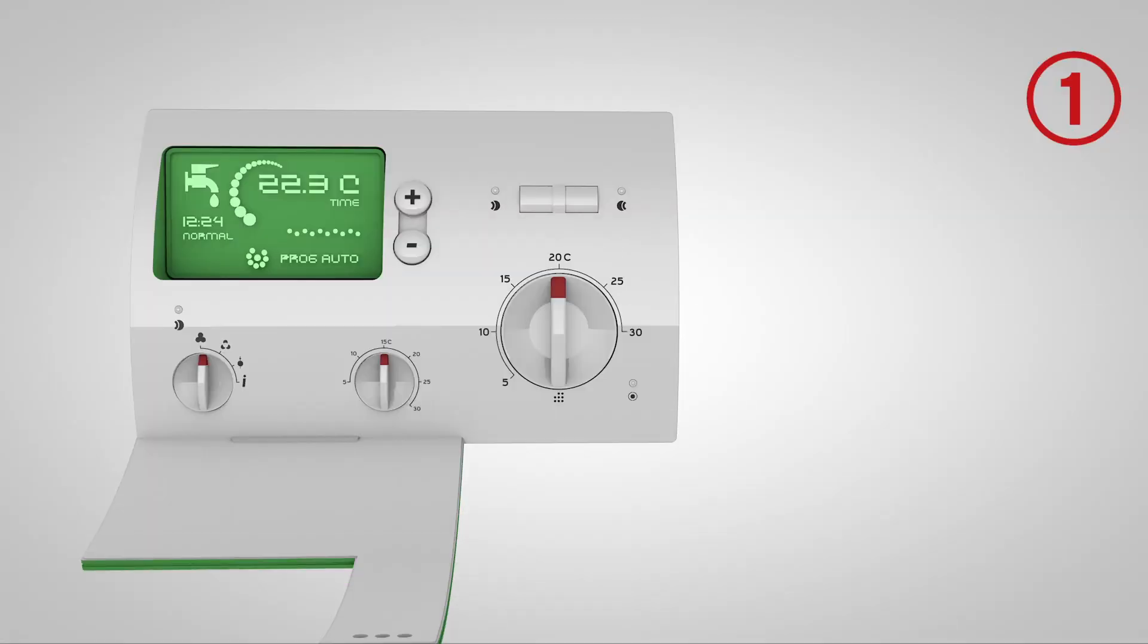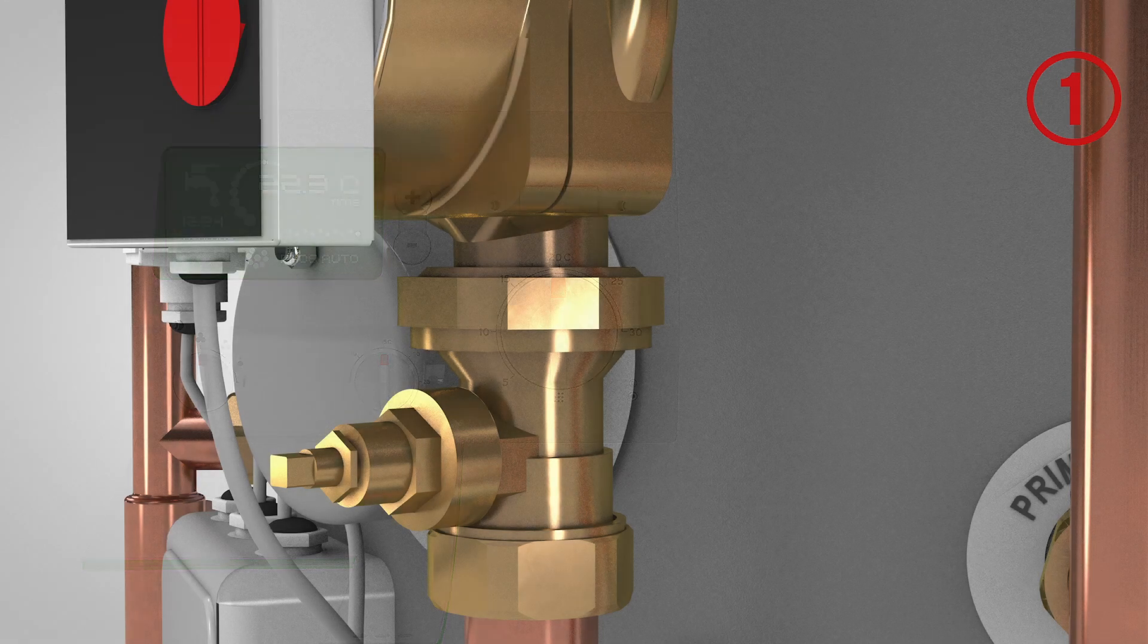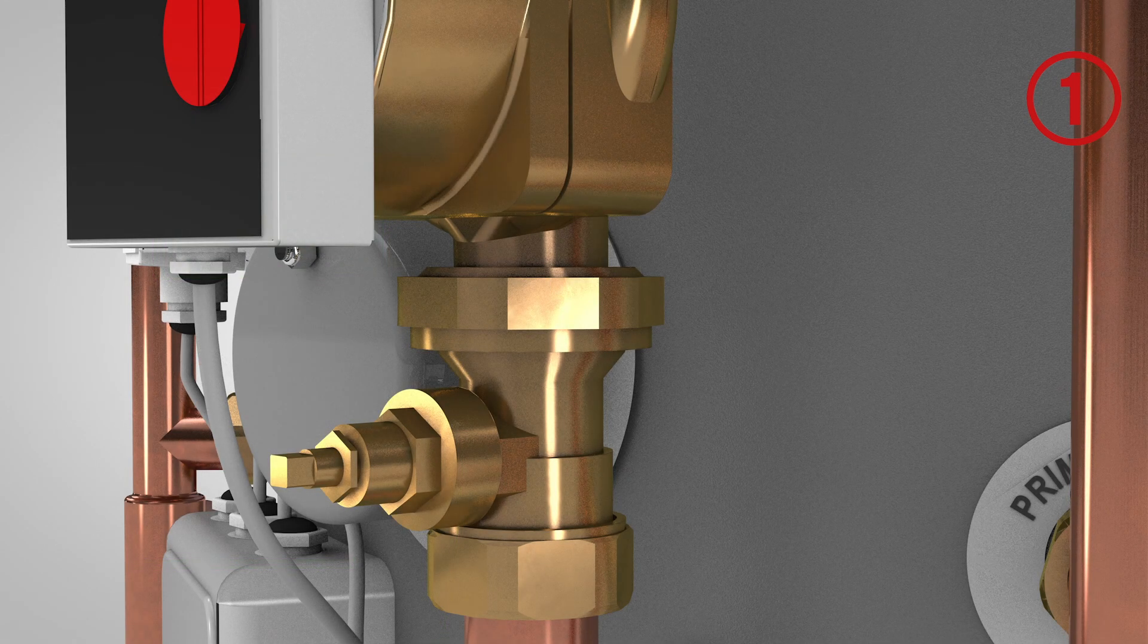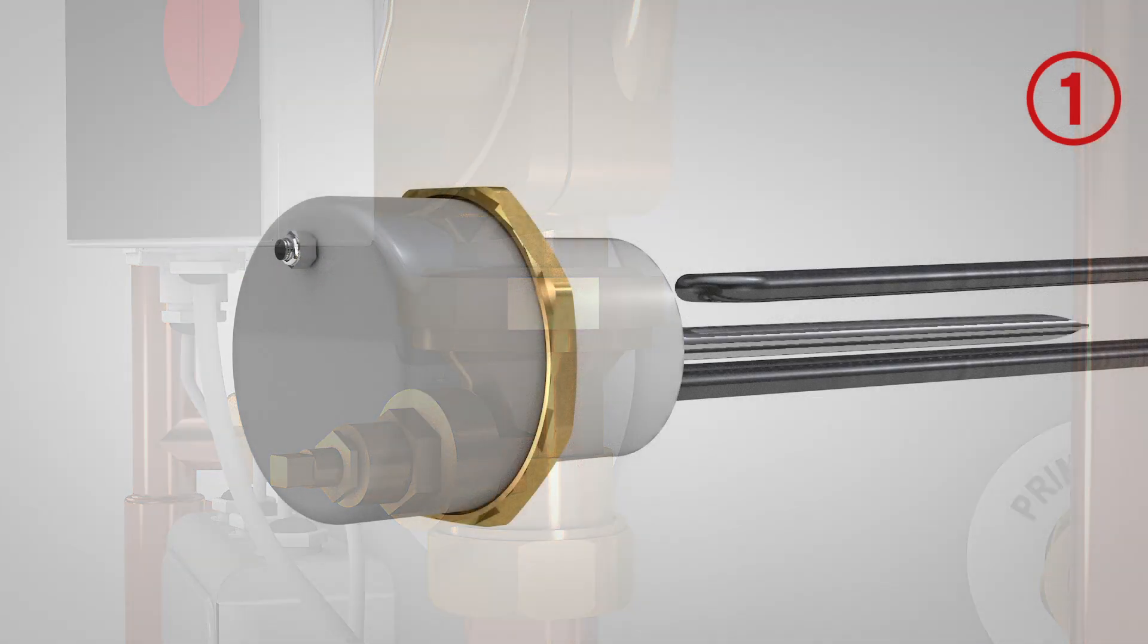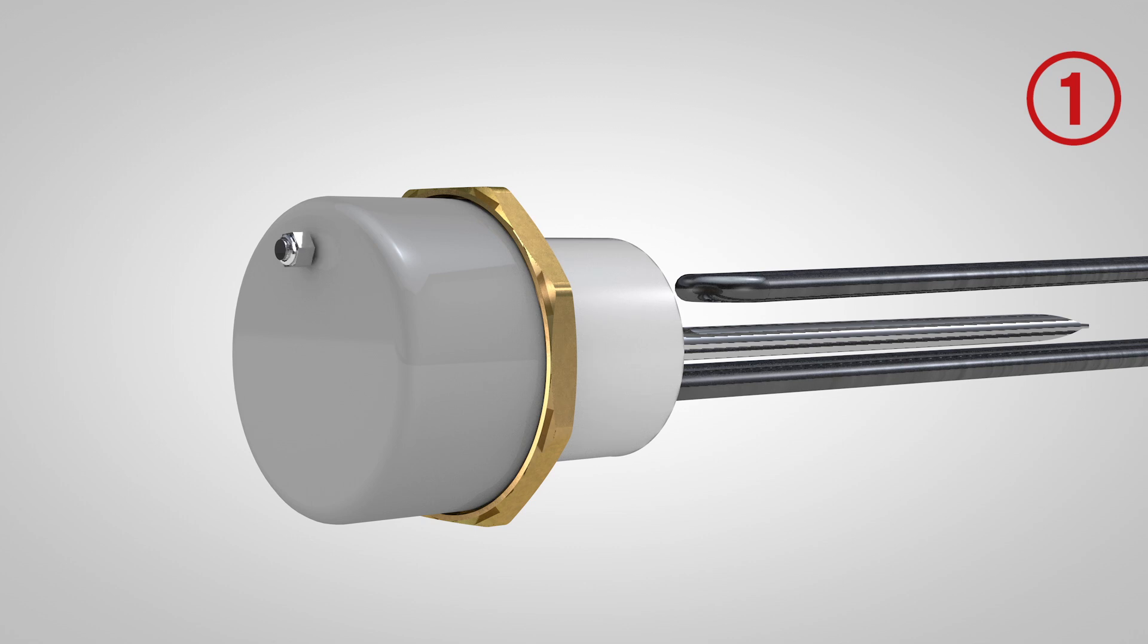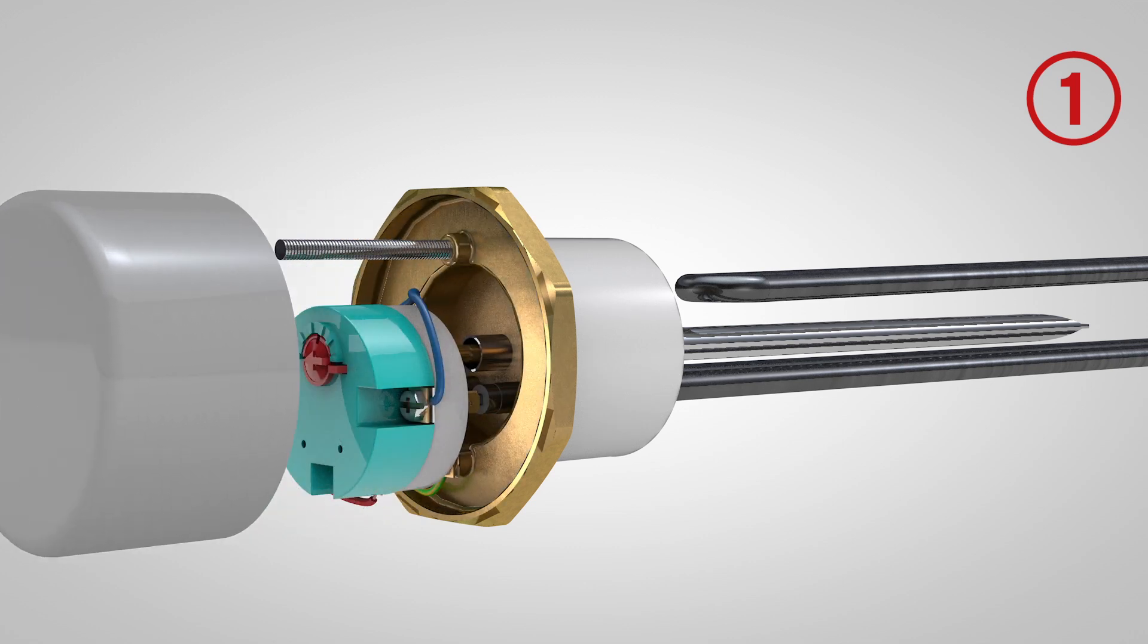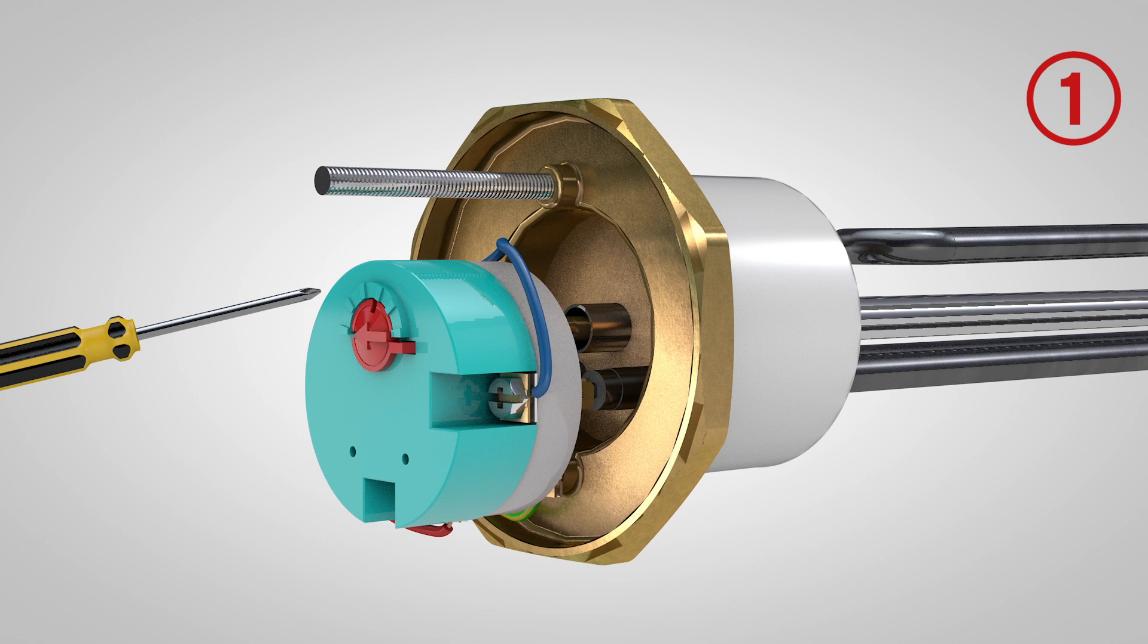The next most common problem to eliminate is to check if the high temperature cutout has popped. To check the thermostat on the immersion heater, isolate it from the power supply and remove the cover. Locate the reset switch on the thermostat and press it down.